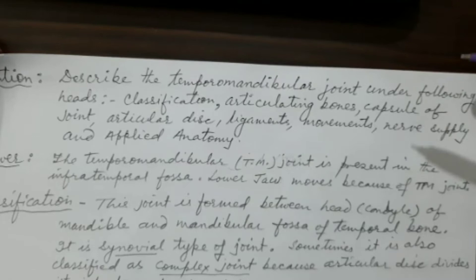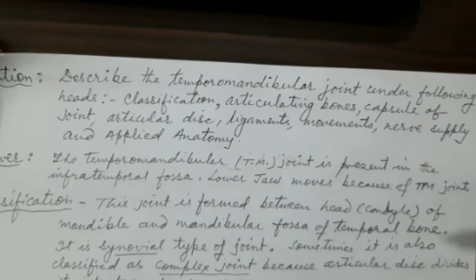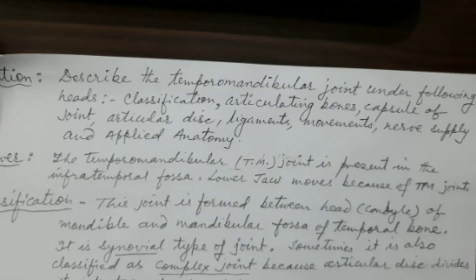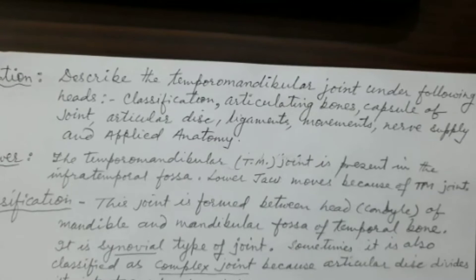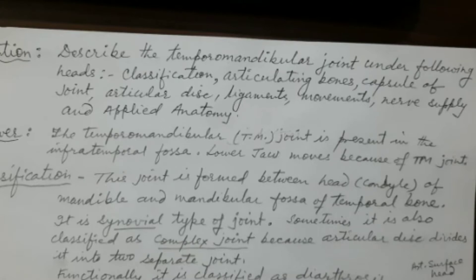The temporomandibular joint is present in the infratemporal fossa. This joint is formed between the condyle of the mandible and the mandibular fossa of the temporal bone. It is a joint between the temporal bone above and the mandible below. All movements of the lower jaw are due to this joint — it is the only mobile joint in the skull.